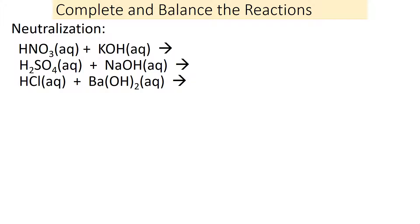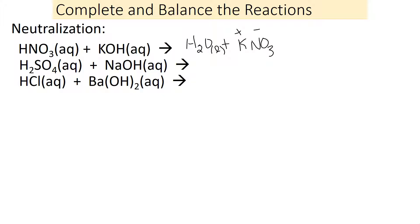Let's try neutralization. We have HNO3 and KOH. Remember it's double replacement: H goes with OH to make H2O, and K goes with NO3. K is + and NO3 is −, so no subscripts — KNO3. We've made liquid water, so we do have a reaction. Balancing: one NO3, one K, one water — already balanced. Based on solubility rules, KNO3 is aqueous.